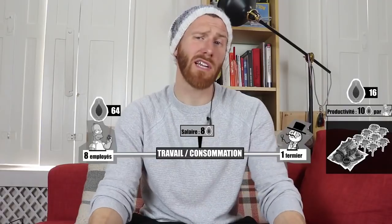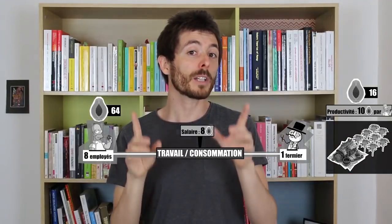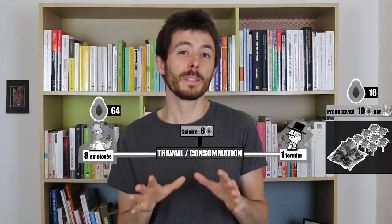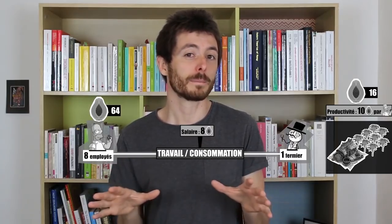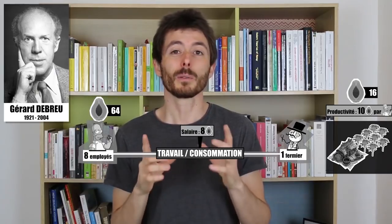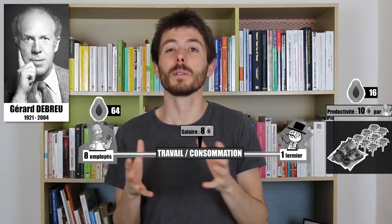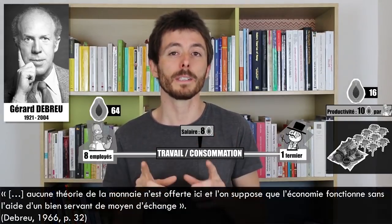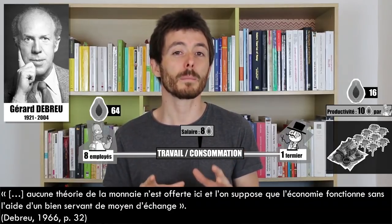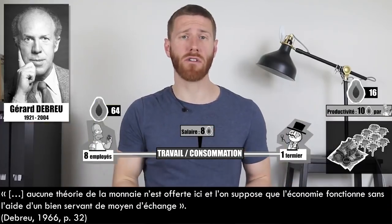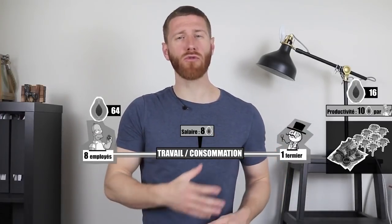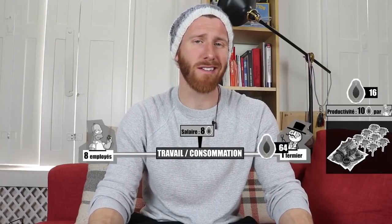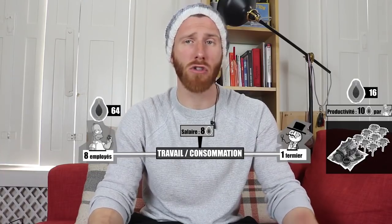So we agreed — we remove money. Most economists throughout the 19th century reasoned this way. Even today, most models used by standard economists function without money. Nobel Prize winner Gérard Debreu (1983), whose work forms the cornerstone of modern standard economic theory, wrote: 'No theory of money is offered here, and it is assumed that the economy works without the help of a good serving as a medium of exchange.' So: employees work in the field, produce 80 papayas, receive 64 as salary, and the farmer keeps 16 papayas as profit.